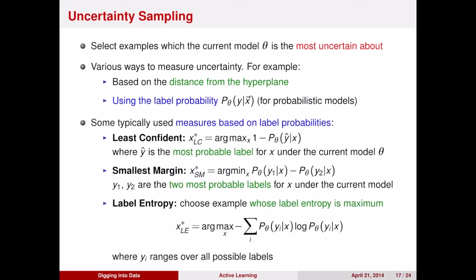One thing you can do is look for the example for which you are the least confident. That is, for which example is the largest probability of a class given that example, the smallest. Another possibility is looking at the smallest margin. Look for where the distance between those two probabilities is the smallest. Another possibility is choose the example with the maximum entropy. That is, for your distribution over classes, what distribution has the highest entropy?